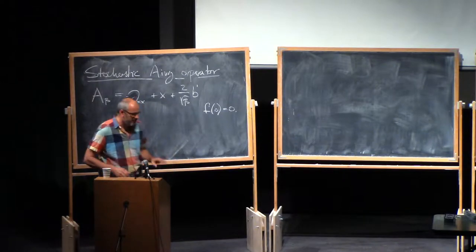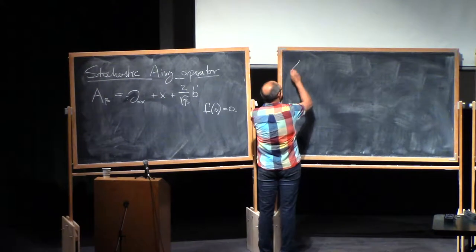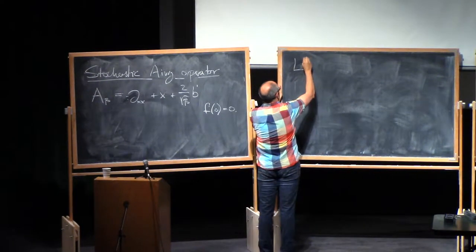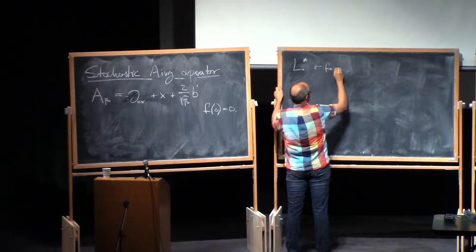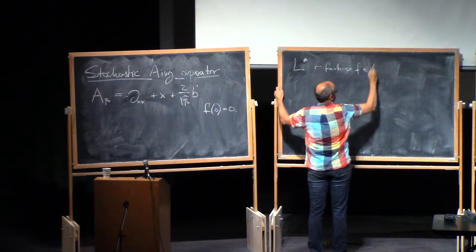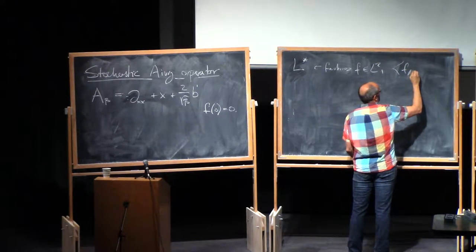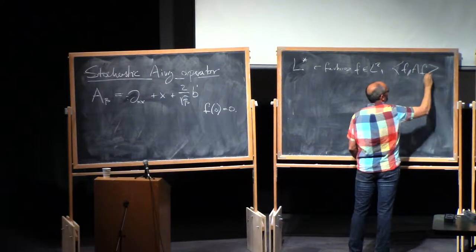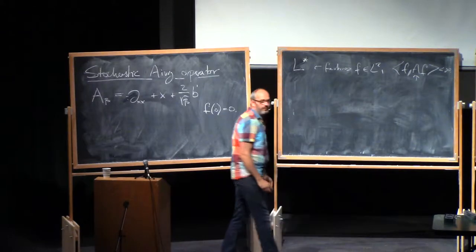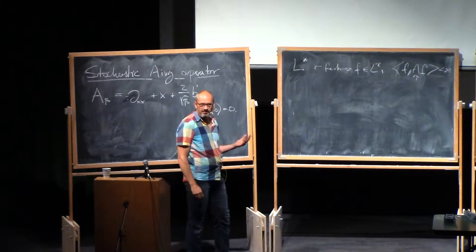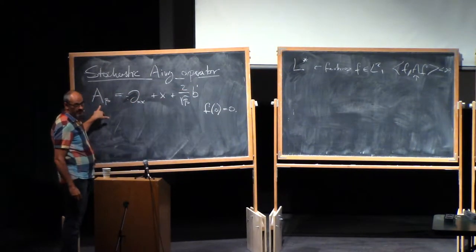Our goal was to define a quadratic form. We defined this space L*, which is functions f in L2 such that f A f — where A is just the ordinary Airy operator — is finite. So this was our L* space. And for every L* function, we would like to define the quadratic form with respect to this operator.